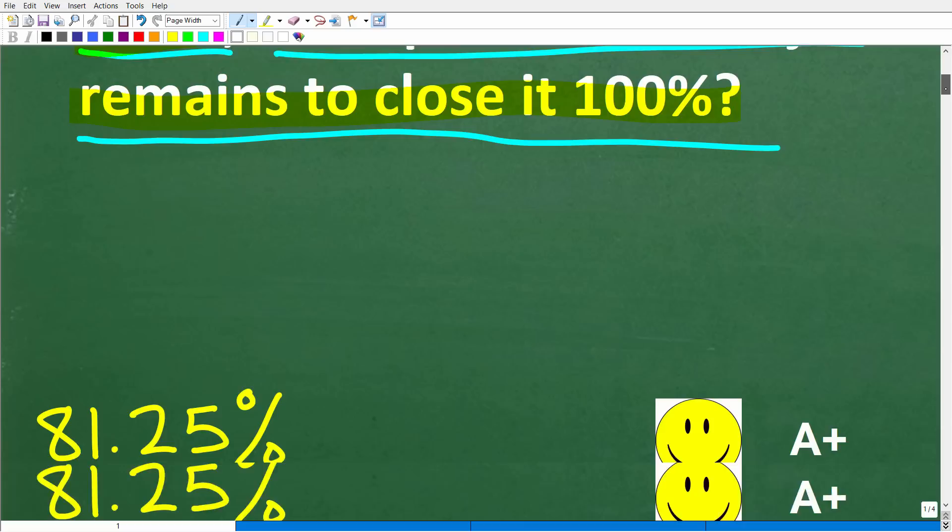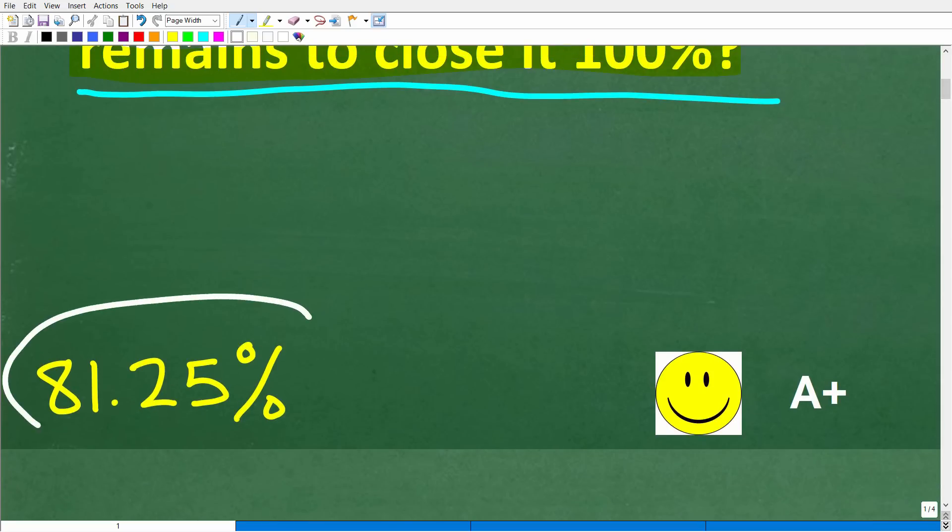Okay, so let's go ahead and take a look at the answer. The correct answer is 81.25%. Now, if you got this right, well, you definitely get a happy face and an A plus.